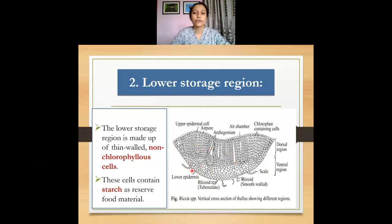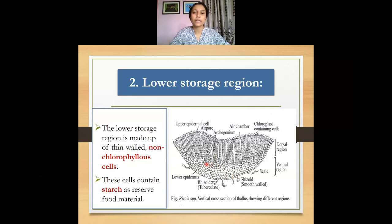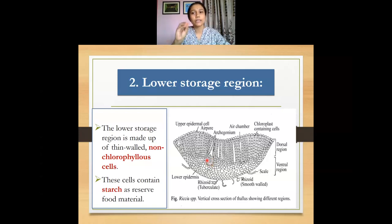So this covers the two anatomical regions — the upper assimilatory region and the lower storage region — in the plant body of Riccia. The sex organs, whether the antheridium (the male organ) or the archegonium (the female organ), are always present embedded within the thallus of Riccia.